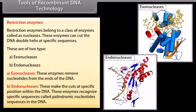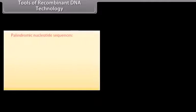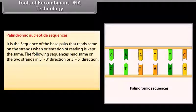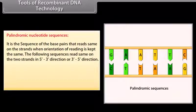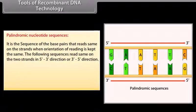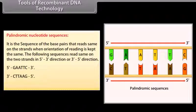Endonucleases make cuts at specific positions within the DNA. These enzymes recognize specific sequences called palindromic nucleotide sequences in the DNA. A palindromic nucleotide sequence is the sequence of base pairs that reads the same on both strands when the orientation of reading is kept the same. The following sequences read the same on the two strands in the 5' to 3' direction or 3' to 5' direction: 5'-G-A-A-T-T-C and 3'-C-T-T-A-A-G.